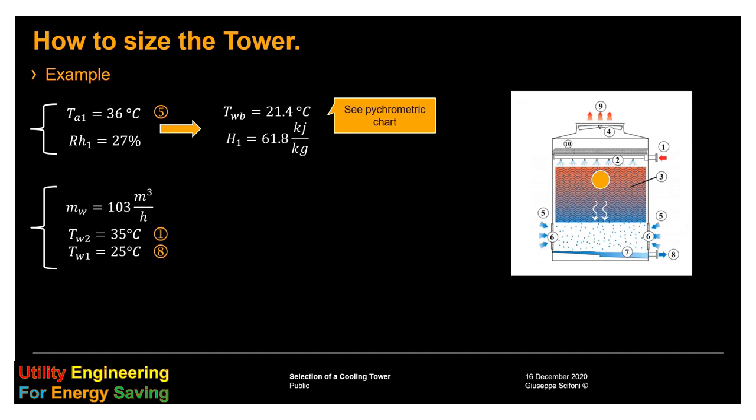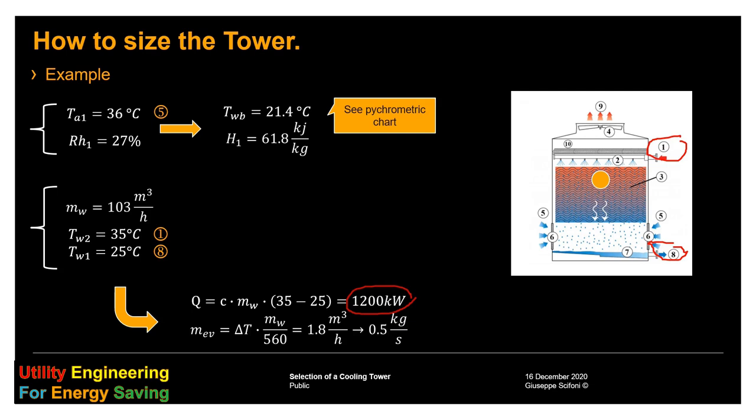From the process side, we know the flow, 103 cubic meter per hour, the entry and the leaving temperature, which corresponds to the position one and eight in the picture. Therefore, we can determine the heat transfer, 1200 kilowatt, and the mass of the water which evaporates, 0.5 kilogram per second.